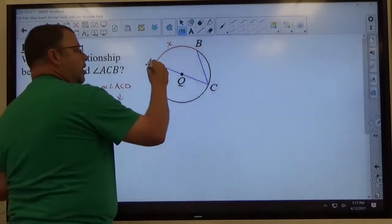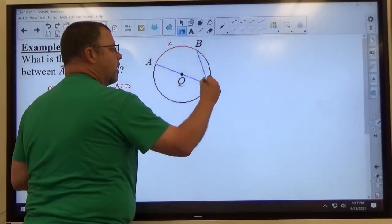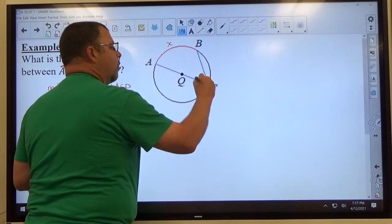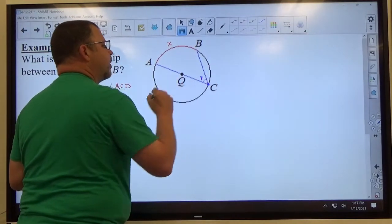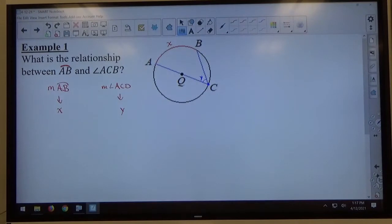And ACB means start at A, go to C, go to B, so C is the vertex, and that's going to be called angle Y. Now, we've already seen something similar to this in this book, involving angles inside of circles versus the measure of the arc.